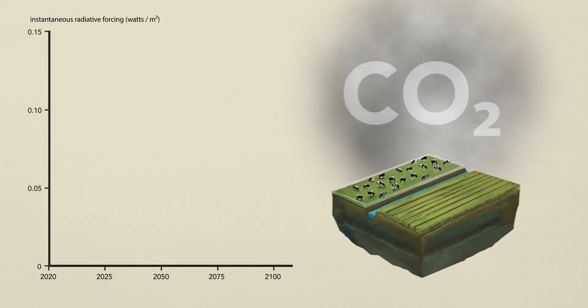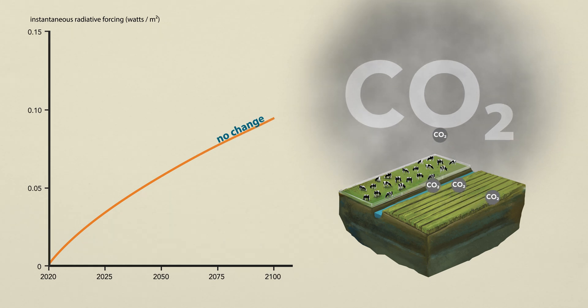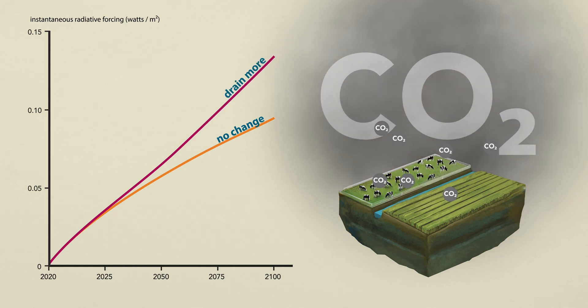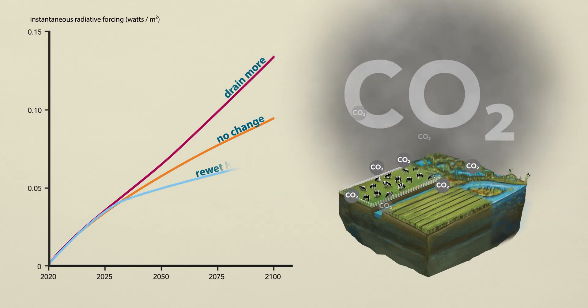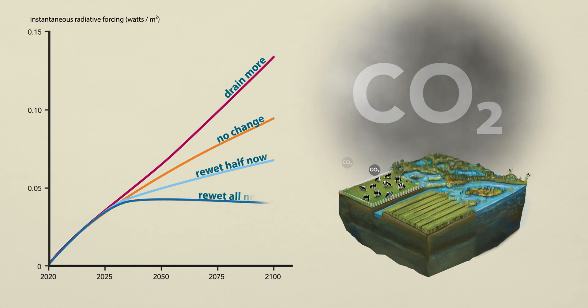In a business as usual scenario, the same amount of CO2 would be emitted each year, resulting in a steady increase of CO2 in the atmosphere. In a scenario in which even more peatlands are drained, this increase would be even larger. Yet, even when half of all currently drained peatlands would be re-wetted, still a lot of additional CO2 would end up in the atmosphere each year. The only way to stop CO2 emissions from drained peatlands is to re-wet them all.